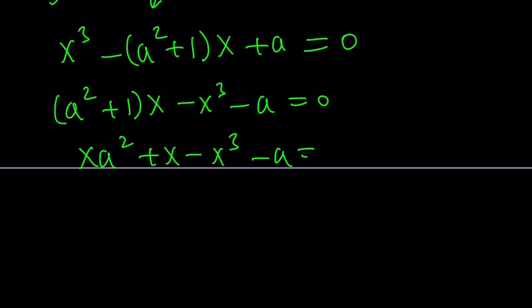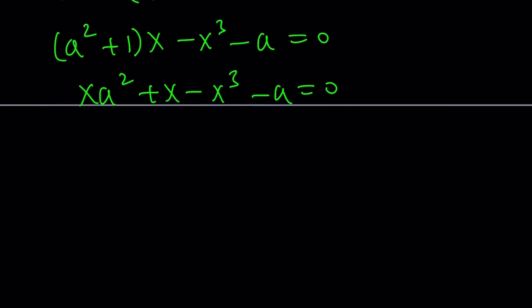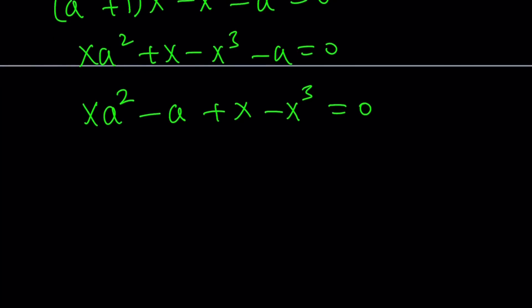So we're going to get (a squared plus 1)x minus x cubed minus a equals 0. And now we're going to expand this and write it as xa squared plus x minus x cubed minus a equals 0. And we're going to focus on a as our variable. So we're going to write it as xa squared minus a plus x minus x cubed equals 0. So this is a quadratic equation in a. And we're going to treat x as a variable, which is kind of weird, but that's a very common technique.